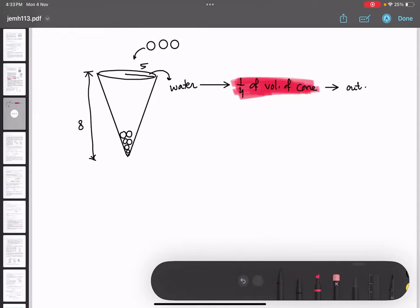So can I say that this one-fourth of water is actually equal to the volume of the spheres? Yes. Got it? Is the logic clear here as of now? Yes or no?